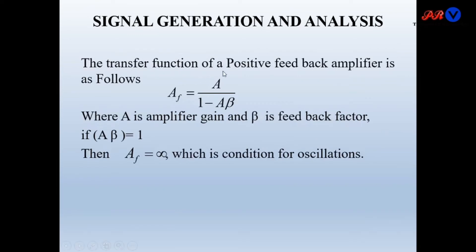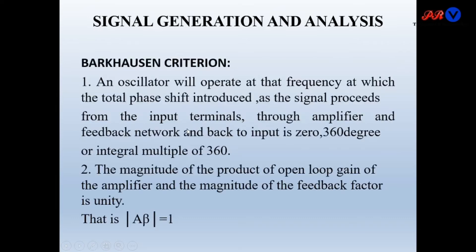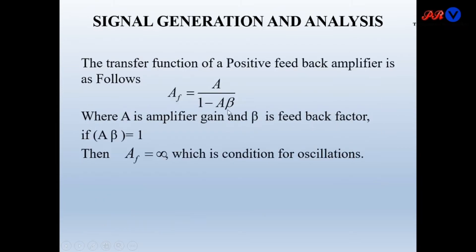The transfer function of a positive feedback amplifier is A/(1 - Aβ), where A is the amplifier gain and β is the feedback factor. If Aβ becomes equal to 1, the denominator becomes zero and the gain with feedback becomes infinite, which is the condition for oscillations.